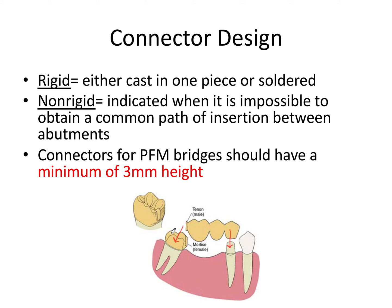If everything were one big rigid piece, you might not even be able to seat the bridge because of the discrepancy between paths of insertion. Using the non-rigid connector design, you seat the first crown, and then the male connector slides into the female connector along an up-and-down path of insertion aligned with the second component's path. You fit the bridge in two steps: placing the first crown, then the second bridge component.